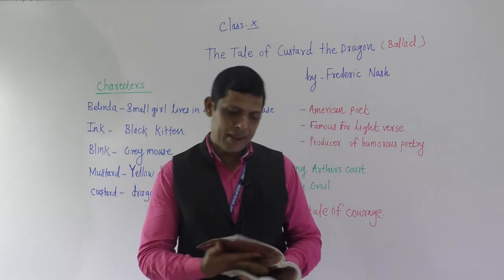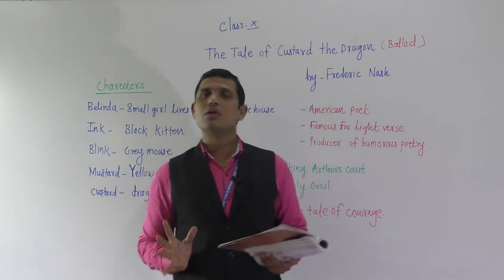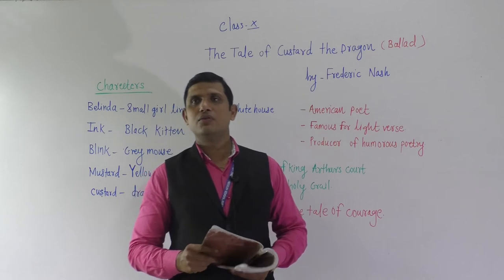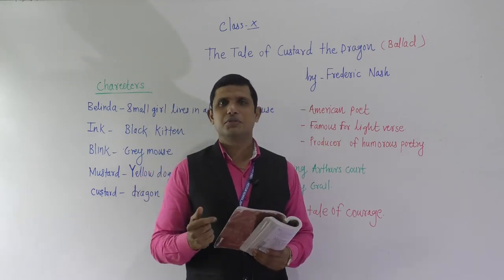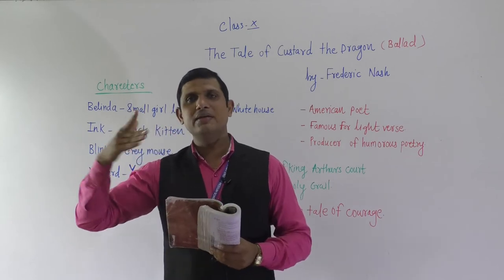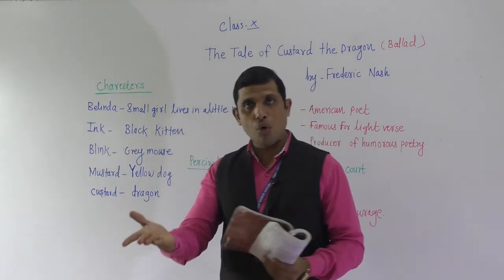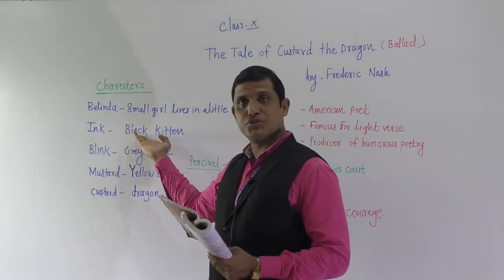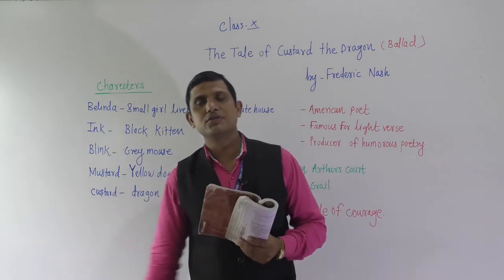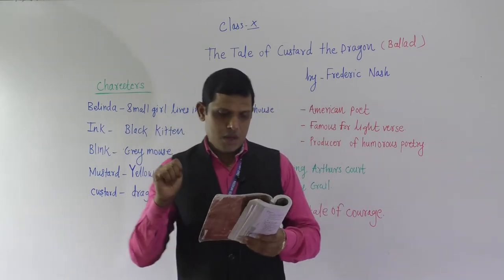Now we will go line by line through the meaning of the poem. 'Belinda lived in a little white house' — Belinda is a very small girl living in a little white house with her four pets: Ink, Blink, Mustard, and Custard. Ink means black kitten, Blink means gray mouse, Mustard means yellow dog, and Custard means a dragon.